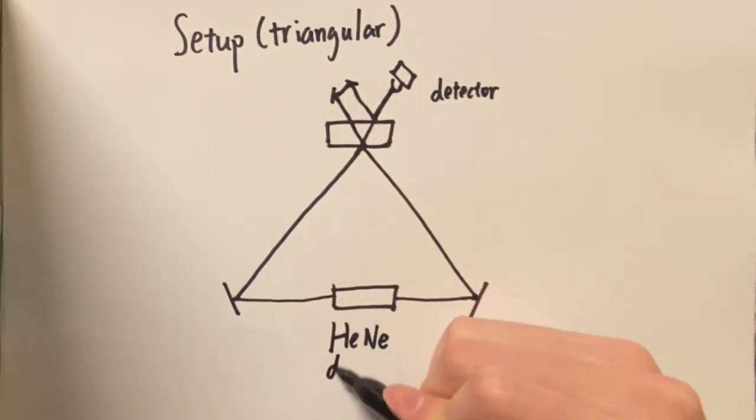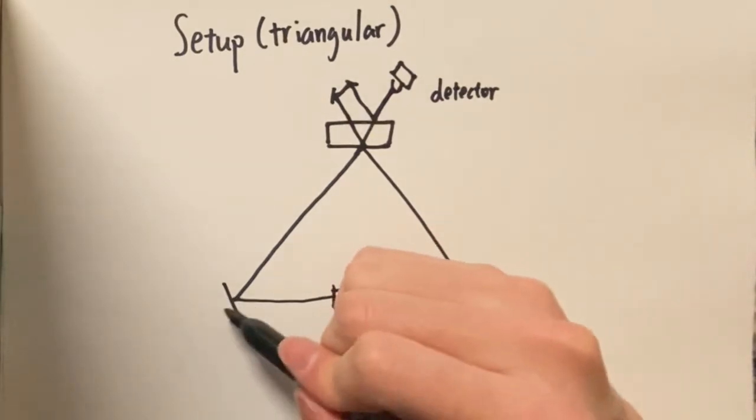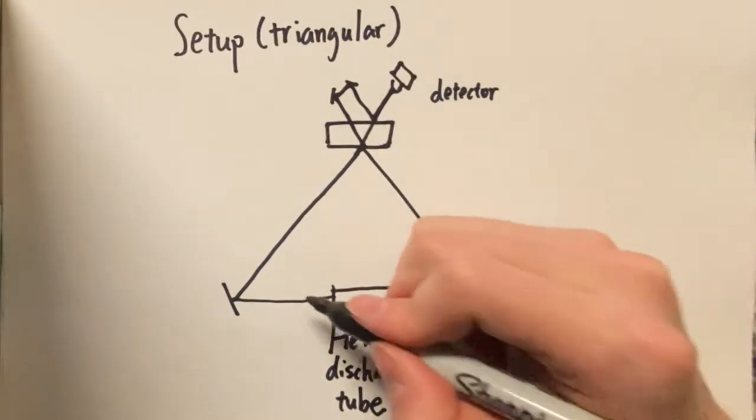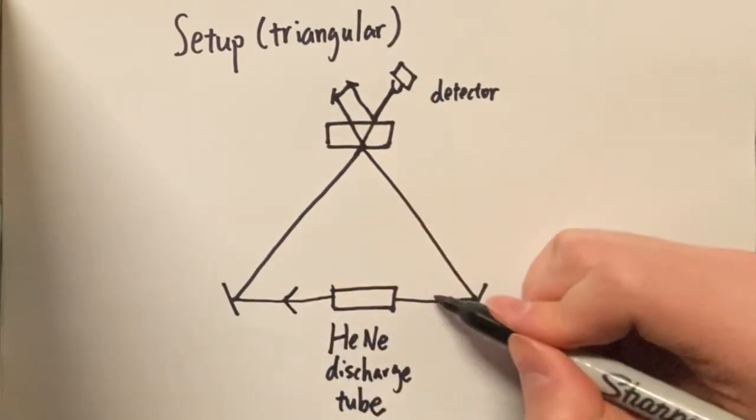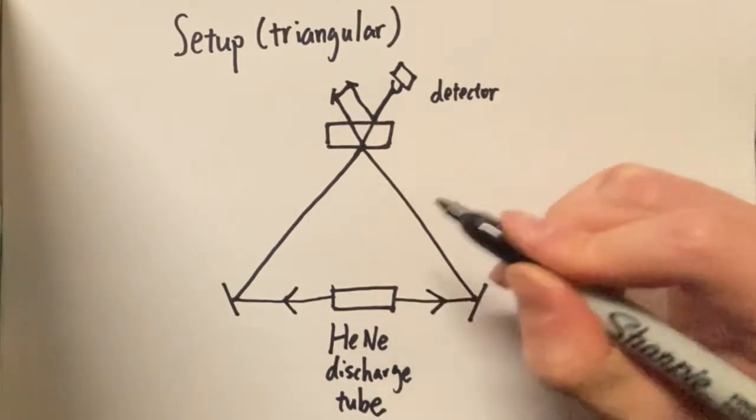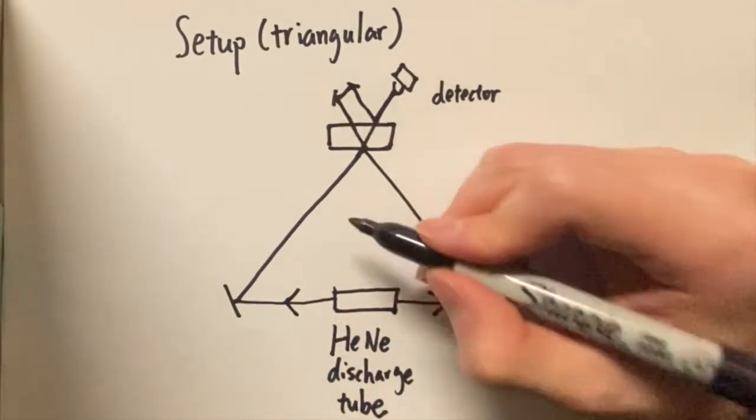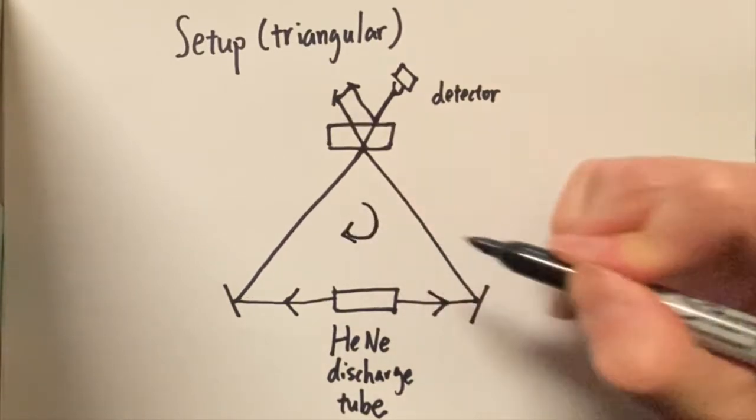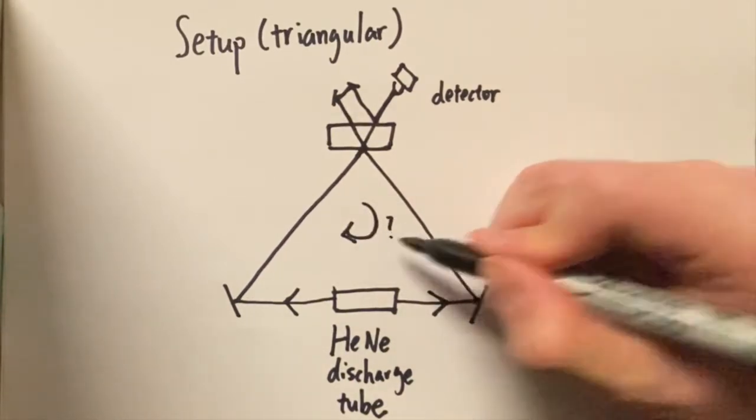Note that for ring laser gyroscope, the light is generated inside the device. There are also other systems sensing rotations that have the light entering the setup from outside. There will be two counter-propagating laser beams traveling through the device. After getting back to the source, both of them will travel the same distance. Also for lasing to occur, there must be an integral number of wavelengths fitted into the cavity.